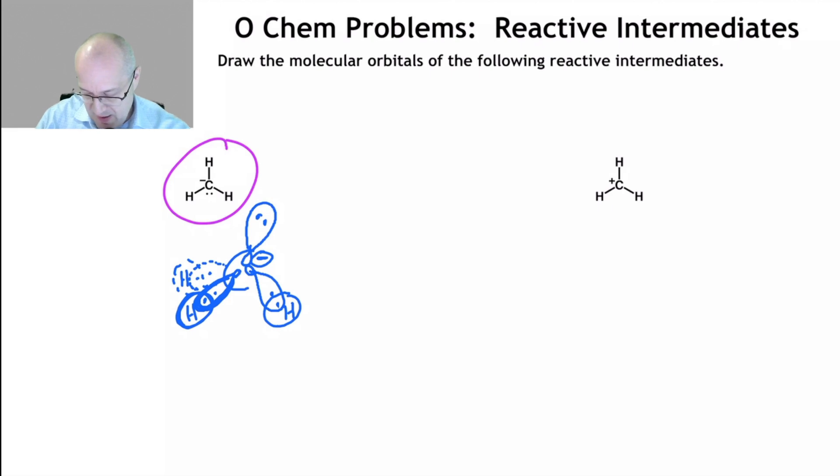Now let's take a look at the carbocation. Carbocations have three electron groups, so carbocations are sp2. These are sp3. Let's write that over here.